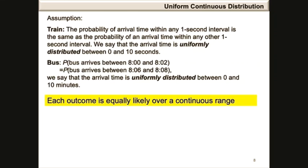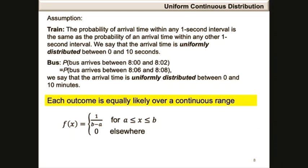In this case, each outcome is equally likely over a continuous range, and therefore the probability density function f of x is defined as 1 over b minus a for all values of x between a and b, where a is the lower boundary of the interval and b is the upper boundary. The probability density function is 0 for all other values of x.